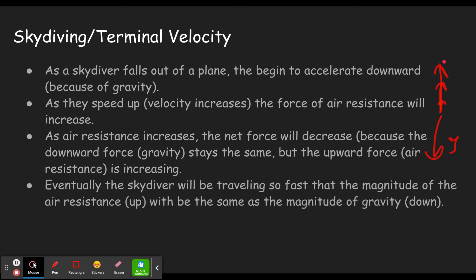Eventually the skydiver will be traveling so fast that the magnitude of the air resistance is the same as the magnitude of the gravity. I had to include the term magnitude because they're not the same. This is down, this is up and force is a vector. So direction matters. But the magnitude of this is equal to the magnitude of that. That means that there's no net force and if there's no net force, there's no acceleration.